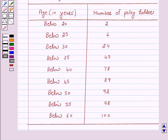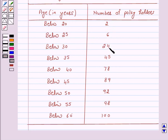If the age is below 20 years then the number of policy holders is 2. If the age is below 25 years then the number of policy holders is 6, below 30 years it is 24, below 35 it is 45, below 40 it is 78, below 45 it is 89, below 50 it is 92, below 55 it is 98, and below 60 it is 100.